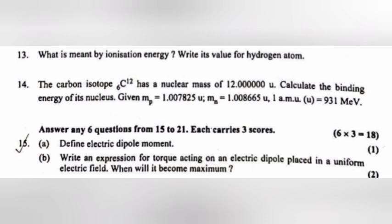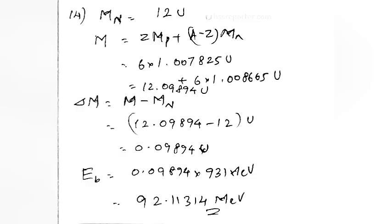Question 14: The carbon isotope 6C12 has a nuclear mass of 12.000U. Calculate the binding energy of its nucleus.